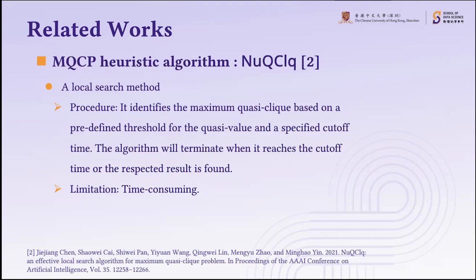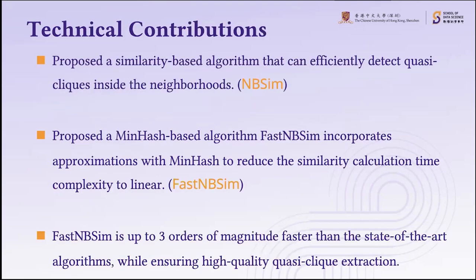The second algorithm, UQCLQ, is a local search method. It identifies the maximum quasi-clique based on a predefined threshold and a specified cutoff time, terminating when it reaches the cutoff time or the desired result is found. This algorithm also has time limitations when you want to obtain a relatively good quasi-clique. The technical contribution of our work is that we propose a similarity-based algorithm that can efficiently detect quasi-cliques inside neighborhoods, and a MinHash-based algorithm that incorporates approximations to reduce similarity calculation time and complexity to linear — up to three orders of magnitude faster than state-of-the-art algorithms while ensuring high-quality quasi-clique extraction.